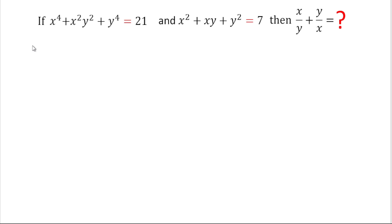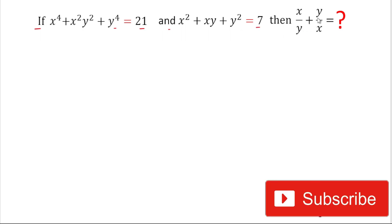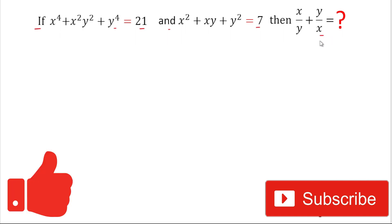Hello friends, welcome back. Today we are going to solve this algebraic expression. The problem is: if x⁴ + x²y² + y⁴ = 21 and x² + xy + y² = 7, then we have to find the value of x/y + y/x. Please subscribe the channel and hit the like icon. Let's start the video.